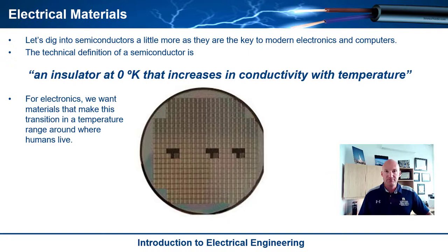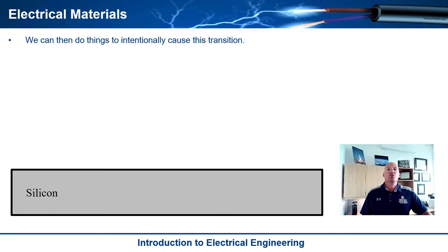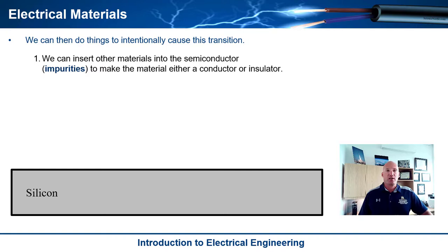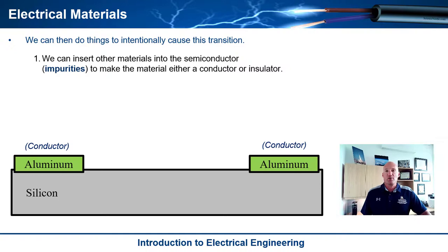When this transition occurs within the temperatures we live in, what we can do with electrical engineering is manually cause this transition to occur. You can insert other materials into the semiconductor to make it either an insulator or a conductor. If you start with a silicon wafer — a thin piece of silicon — you can actually add metals to it. You can plate metals like aluminum or copper onto it and they'll bond to that silicon, letting you lay down wires or traces that are conductors. That allows you to route current and electricity across the silicon semiconductor.